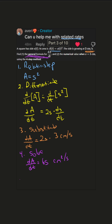Let's do the second part: the numerical value when the side is five centimeters. Well, for that we just plug that in. So dA/dt equals six times five, because that's the side. That equals 30 centimeters squared per second.